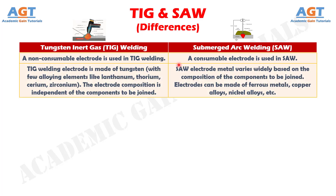Number 2: the TIG welding electrode is made of tungsten with few alloying elements like lanthanum, thorium, cerium, and zirconium. The electrode composition is independent of the components to be joined, whereas in submerged arc welding, the electrode metal varies widely based on the composition of the components to be joined. Electrodes can be made of ferrous metals, copper alloys, nickel alloys, etc.